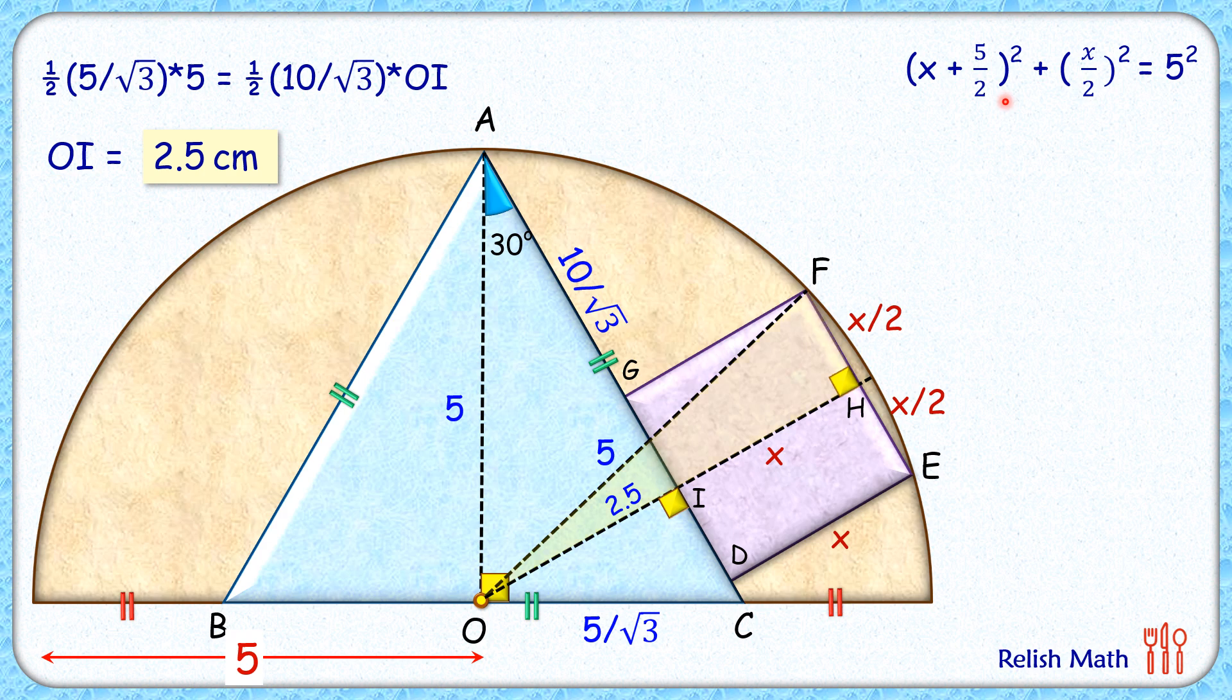Opening the bracket, applying A plus B whole square formula, we'll get the equation in this form. Multiplying the full equation by 4 and then simplifying it, we'll get our quadratic equation. Here each term is a multiple of 5, so let's divide the equation by 5 to simplify it further.